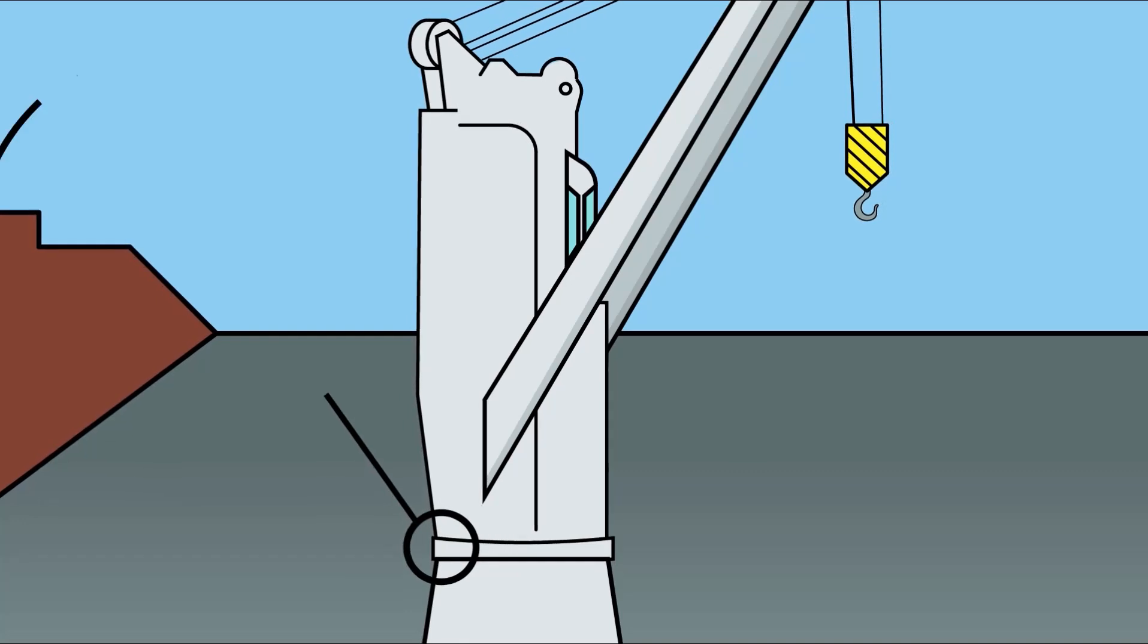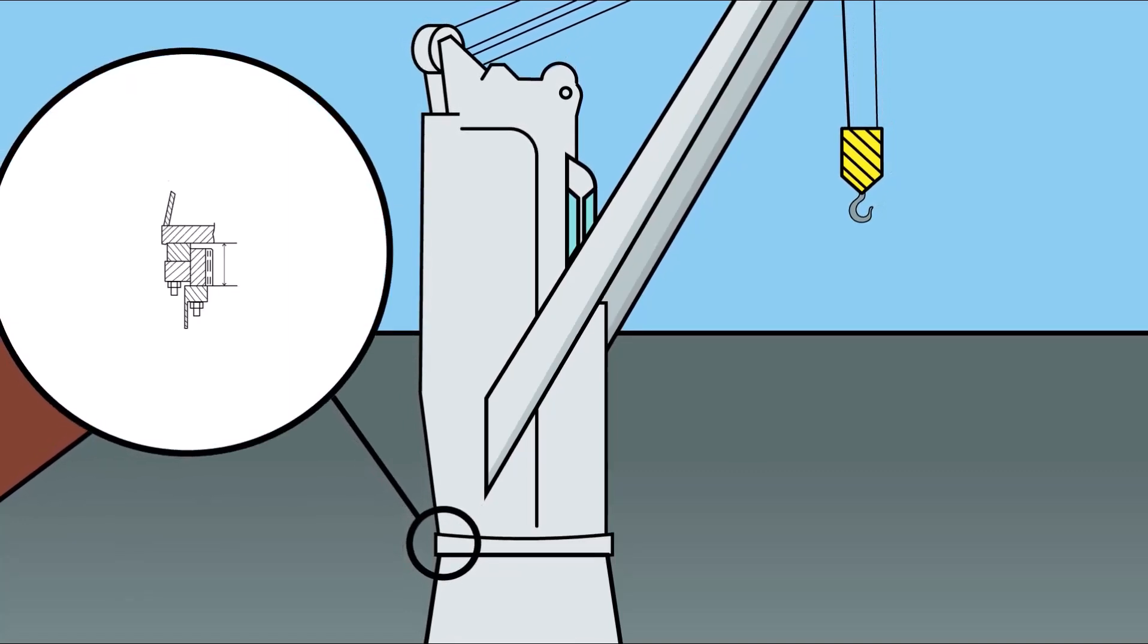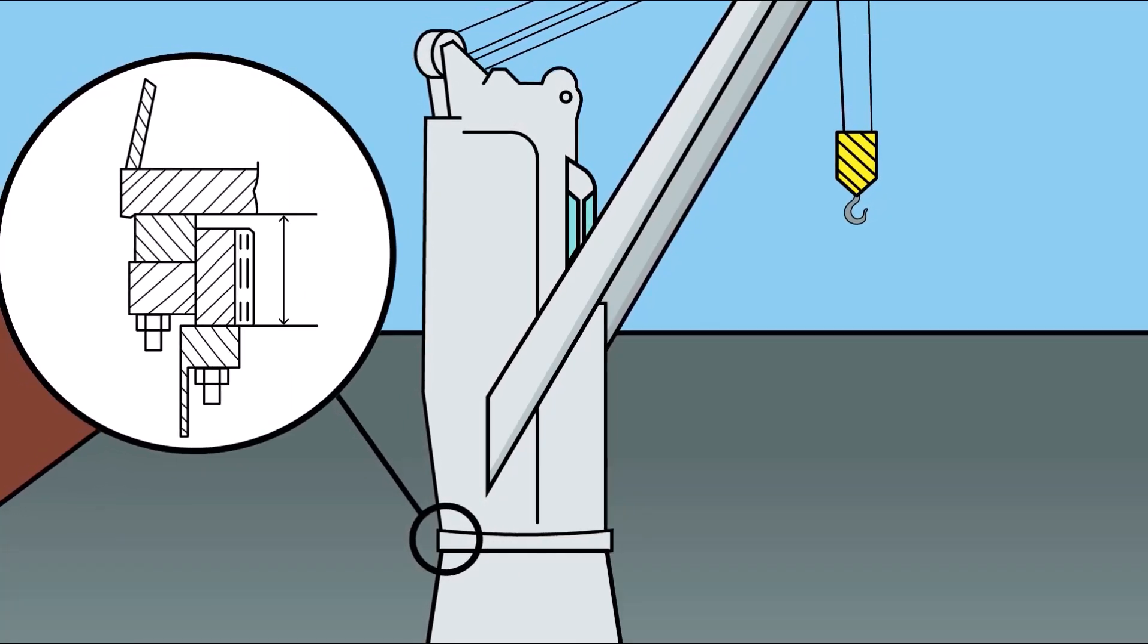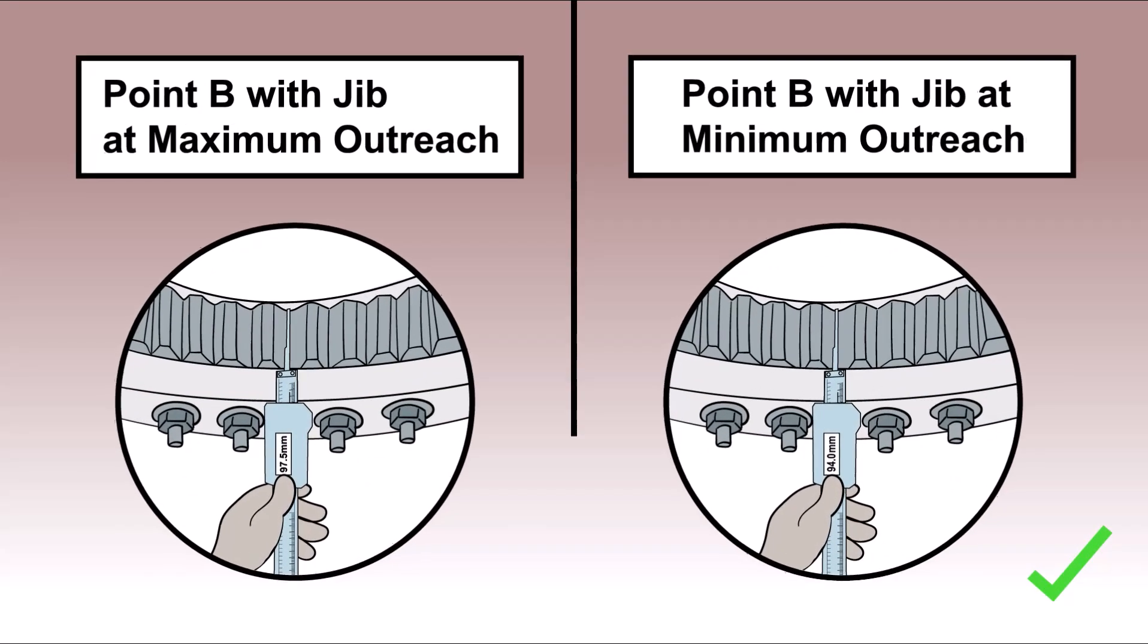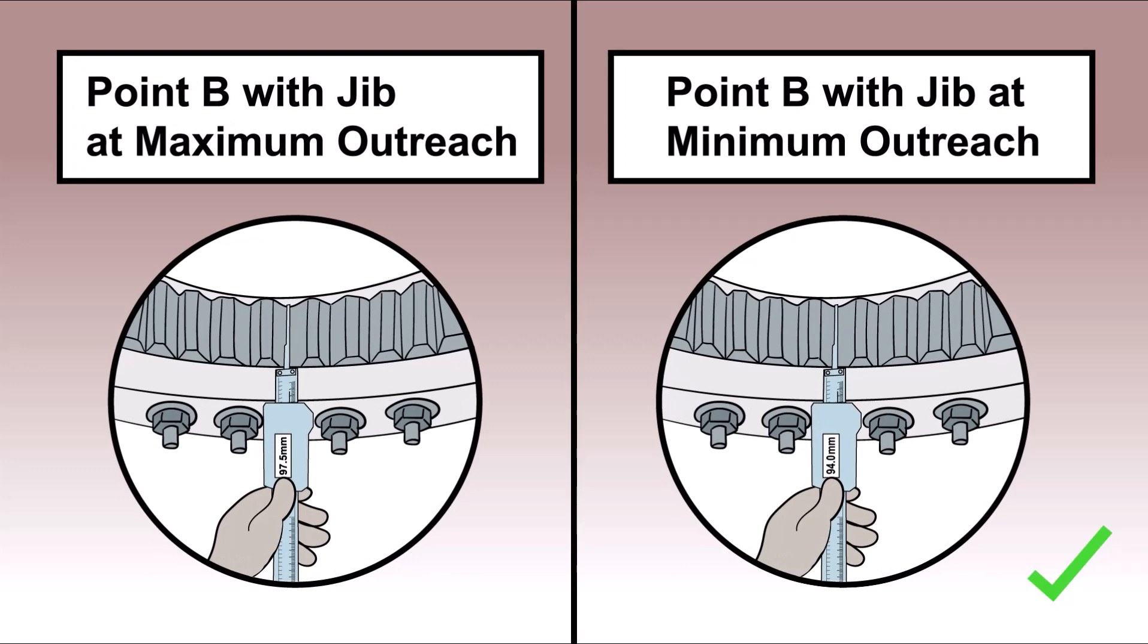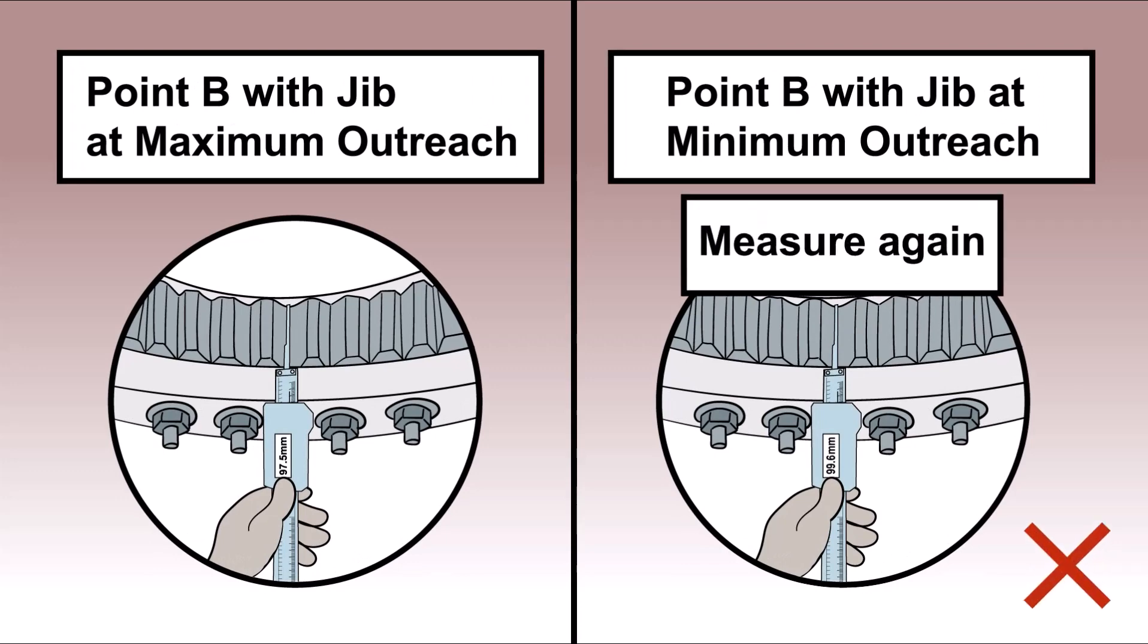Providing the difference is within limits, the jib is then luffed to minimum outreach. A second reading is then taken from reference point B. If this reading is equal to or greater than the initial reading, then retake first measurements.